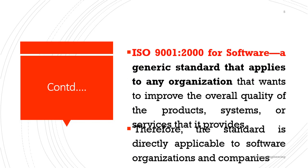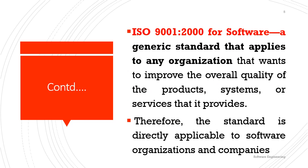The next standard is ISO 9001:2000. It is a generic standard that applies to any organization that wants to improve the overall quality of their products, systems, or services. Therefore, this standard is directly applicable to software organizations and companies, helping them improve product quality.